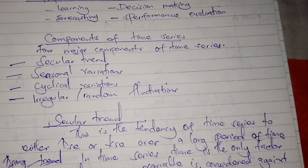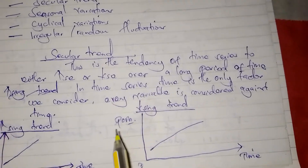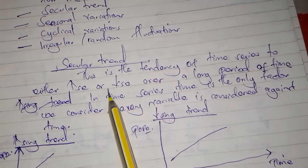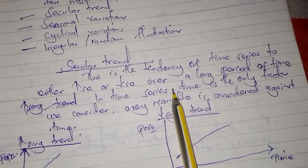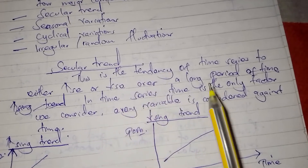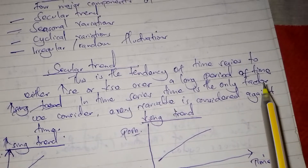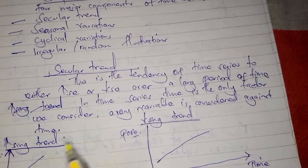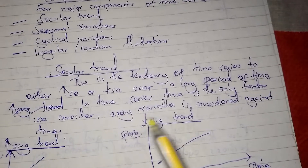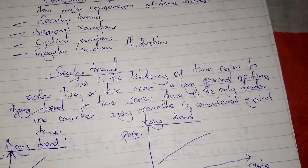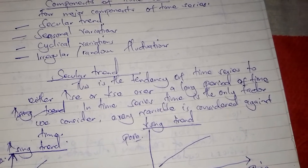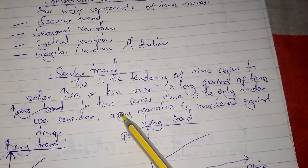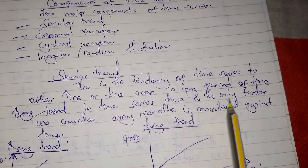We shall start with the secular trend. The secular trend is the tendency of a time series to either increase or decrease over a long period of time. If it is increasing, it increases over a long run continuously. If it is decreasing, it decreases over a long period of time without increasing. In time series, time is the only factor we consider.